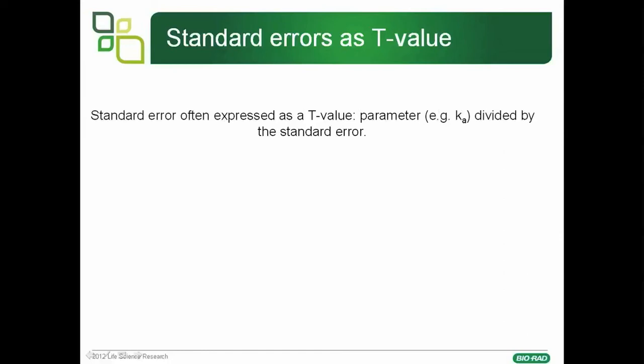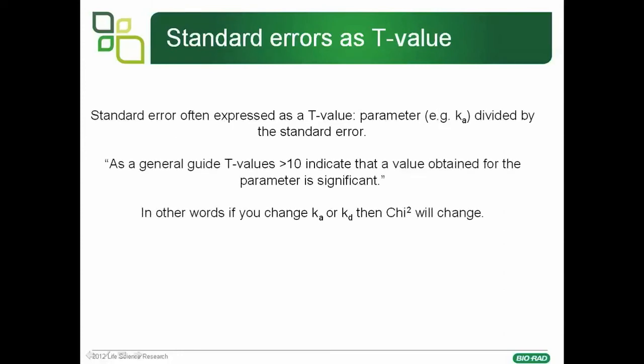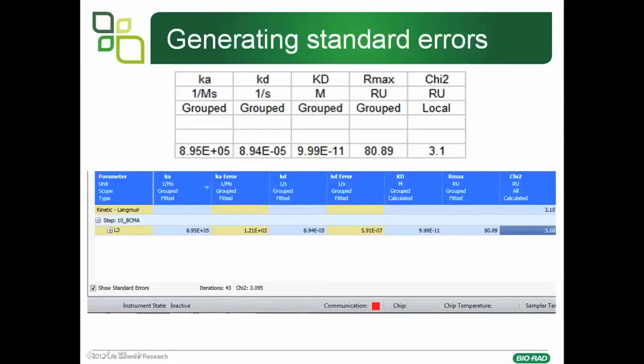People often express the standard error as a t-value. The t-value is generated by taking the parameter — for example Ka — and dividing it by the standard error. From the evaluation software manual, t-values greater than 10 indicate that the value obtained for the parameter is significant. In other words, if you change Ka or Kd, then the chi-squared fit to the model will change.